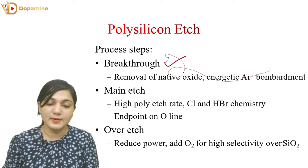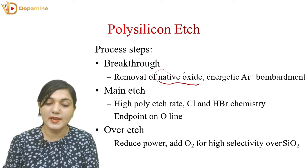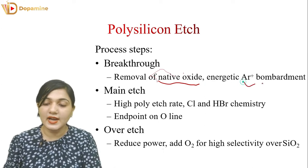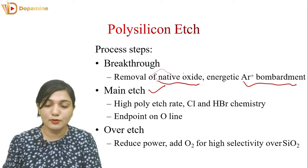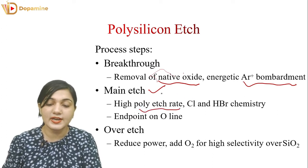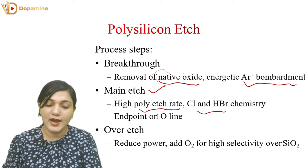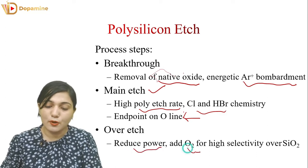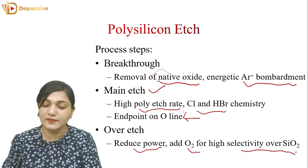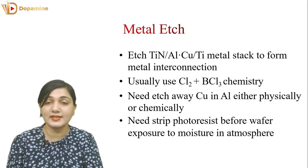The poly-silicon etch process steps are: first, breakthrough — removal of native oxide using energetic argon ion bombardment. Then main etching with chlorine, which gives a high poly-silicon etch rate. We use Cl and HBr chemistry and calculate the endpoint from the O-line. In the over-etch step, we use reduced power and add O2 for high selectivity over SiO2, so that silicon dioxide is not consumed.